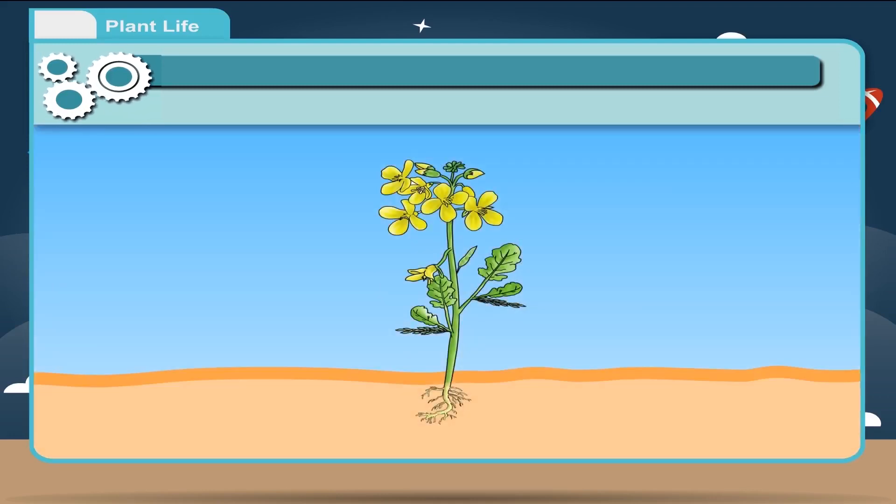Second, the system above the ground which we see is called the shoot system. The shoot system consists of stem, leaves, flowers, and fruits. We will learn about the leaf and the flower parts of a plant in detail.